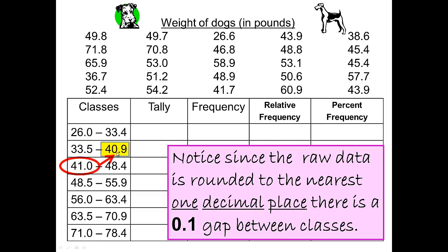Between 40.9 and 41.0 is a 0.1 gap. A 0.1 gap between 48.5 and 48.4. Between 56.0 and 55.9 there's a 0.1 gap. Between 63.5 and 63.4 there is a 0.1 gap. And between 71.0 and 70.9 there's a 0.1 gap.